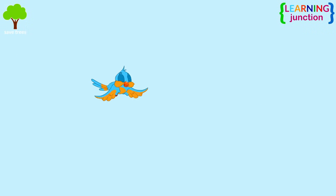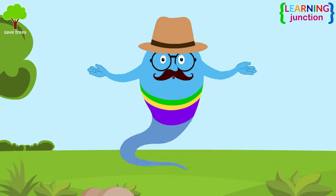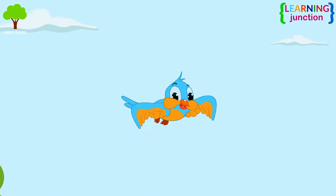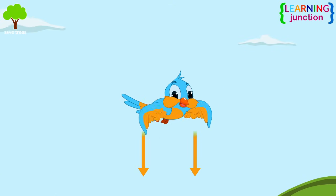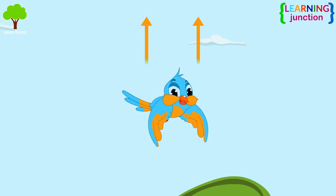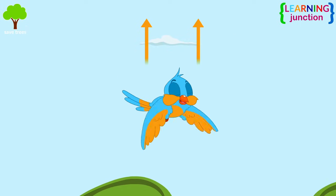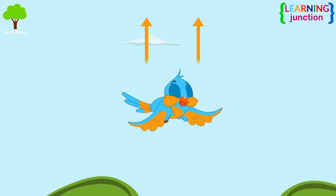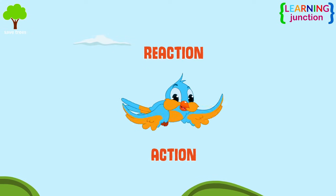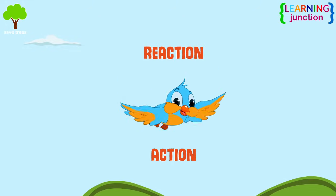Look at this cute bird flying in the sky. Newton's third law helps birds to fly. The wings of birds exert a downward force on the air. The air also exerts an equal and opposite force which pushes birds in an upward direction. This action-reaction combination helps birds to fly in the air.